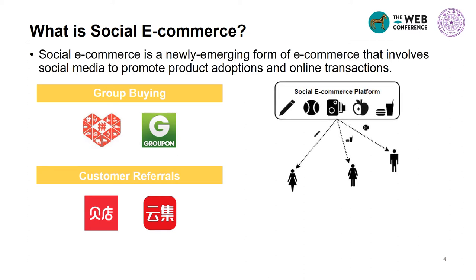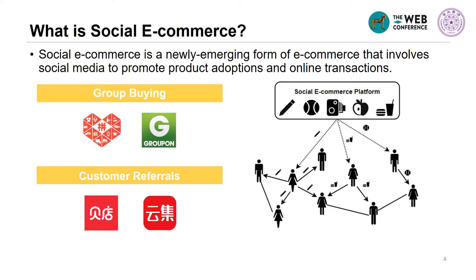One common feature of these new social e-commerce platforms is that they rely on part of the customers to actively promote items through their social networks. As a result, customers' purchase decisions are easily affected by one another, and people connected to these customers form into highly engaged communities — like Community A, B and C shown in the figure.